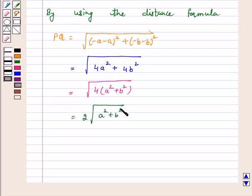So the distance between the points (a,b) and (-a,-b) is 2√(a²+b²). The answer for this question is 2√(a²+b²).